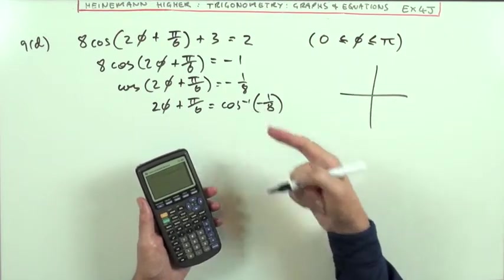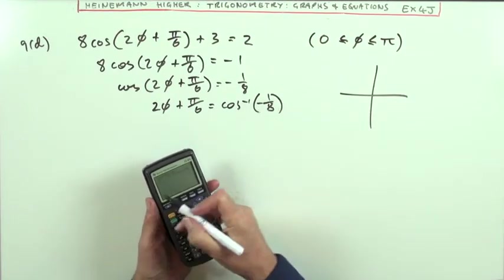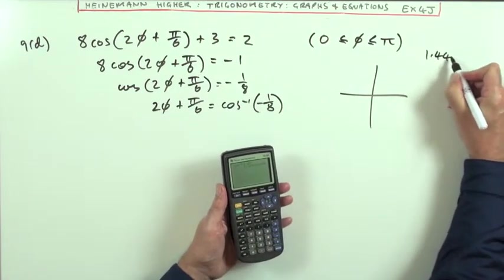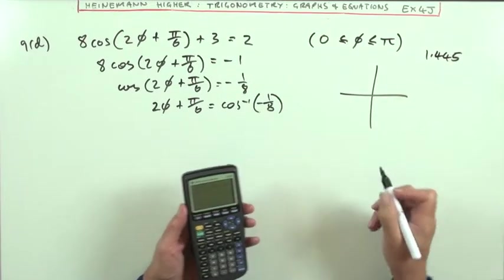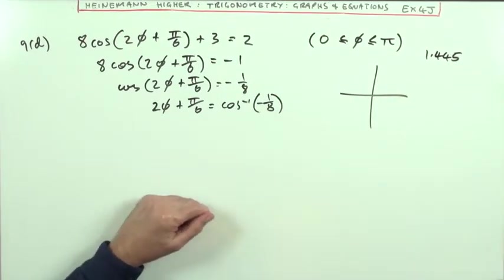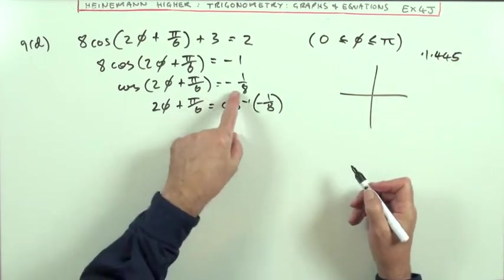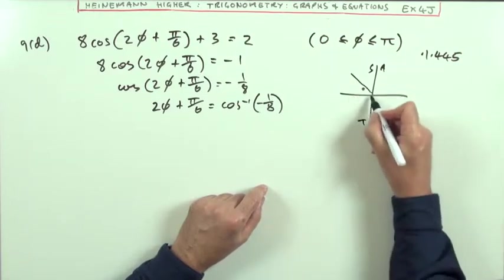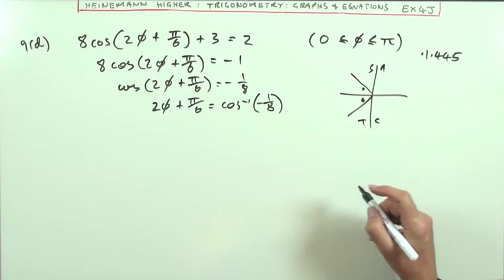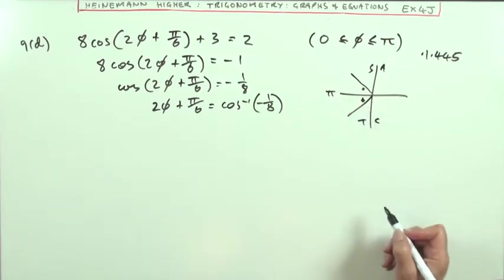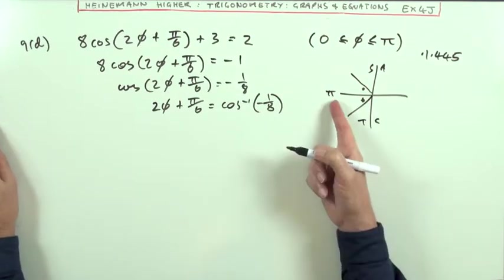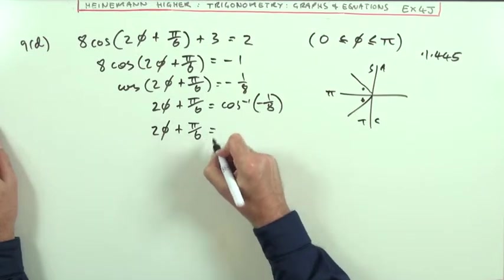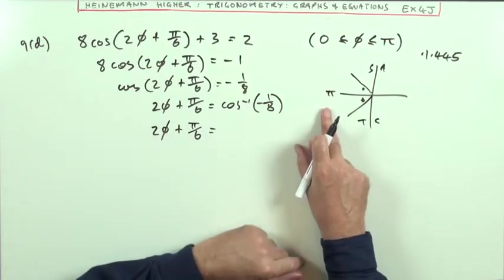I'll use my calculator, letting the CAST diagram take care of the sign. I just want the acute angle for one eighth. Putting an eighth in with the calculator in radian mode gives 1.445. If cosine is negative, using CAST, I'm in the second or third quadrant.